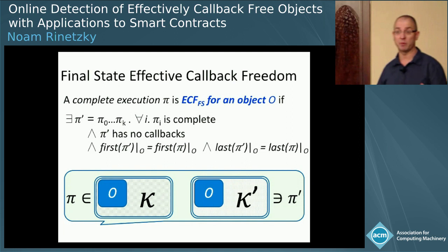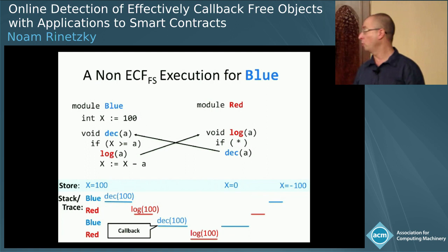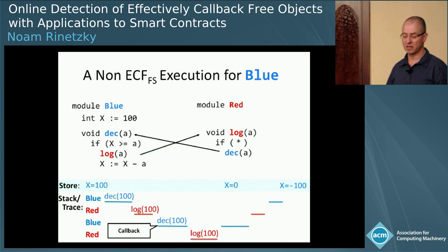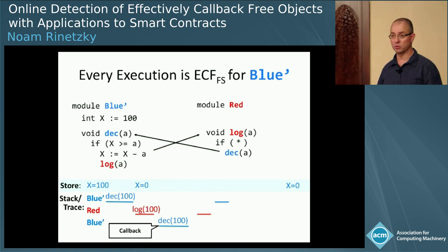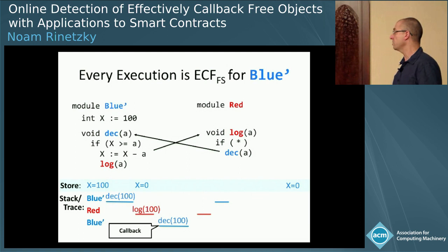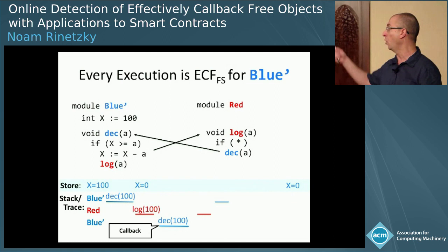Looking at our problematic execution, it is non-ECF: it's not possible to start an execution without callbacks from X equal to 100 and reach X equal to minus 100. However, with a simple fix — turning the call to log into a tail call, so we make our change before calling the external method — we get a new module where callbacks can occur but the execution produces a state that could also be produced without log calling back into the module.